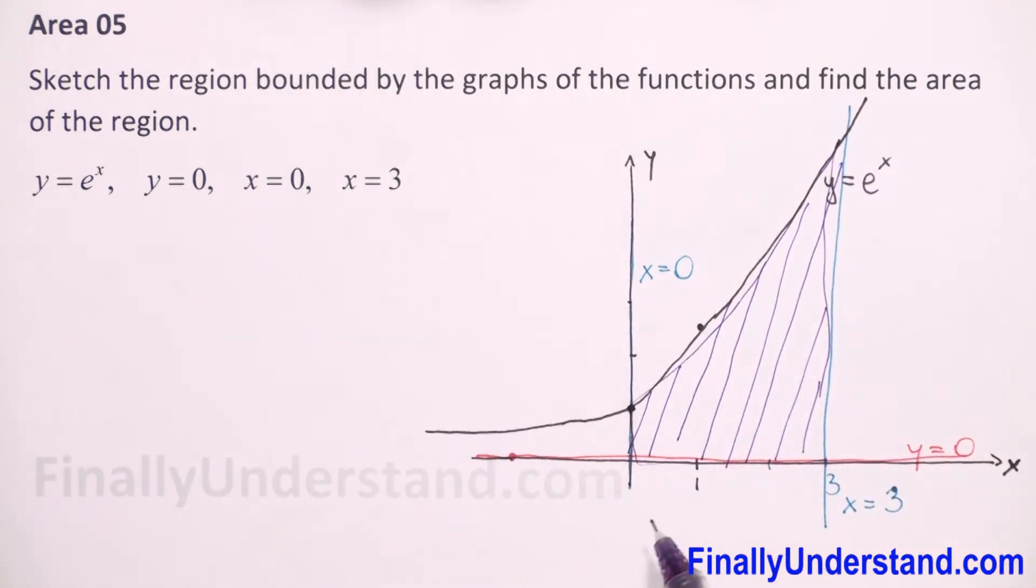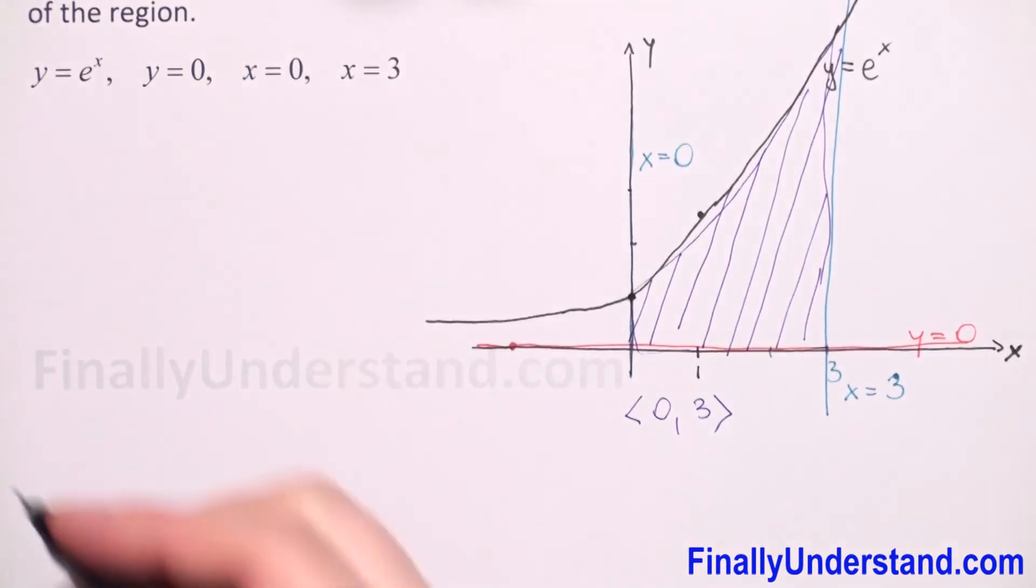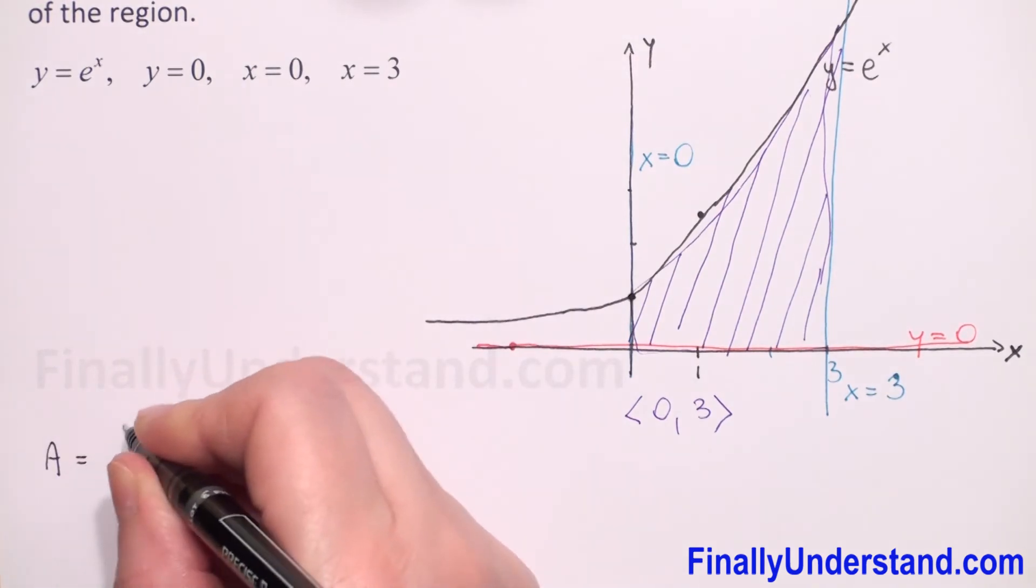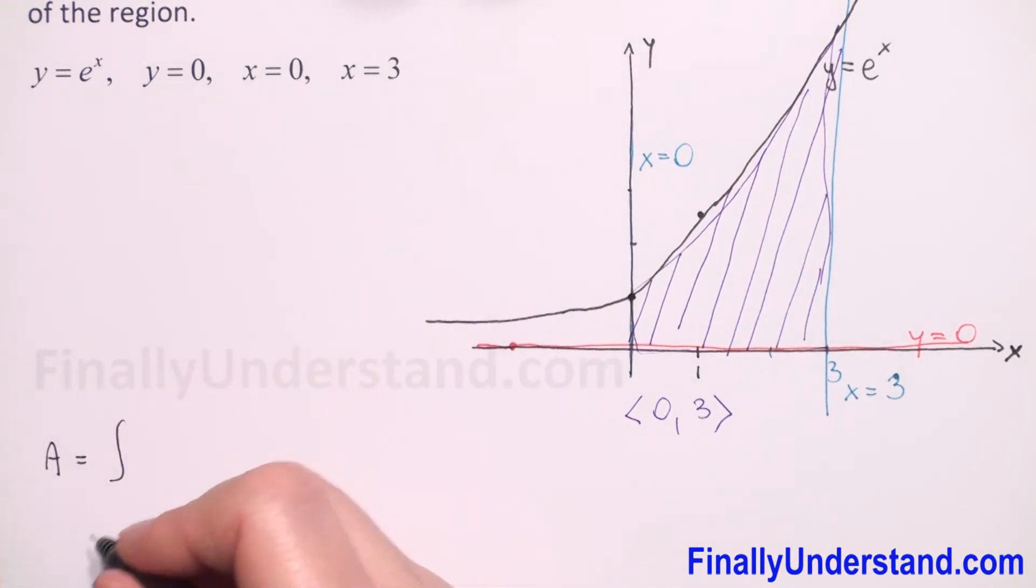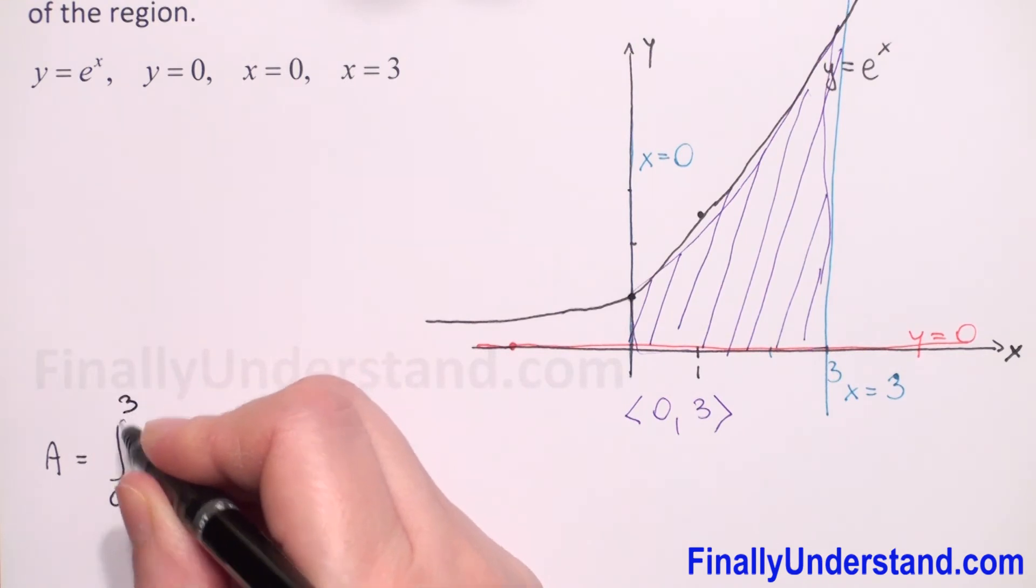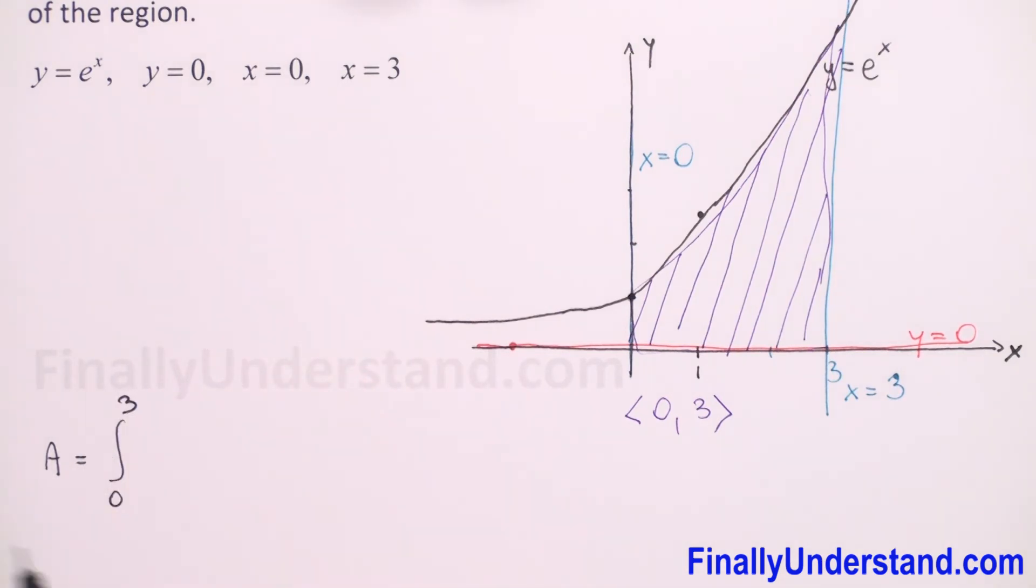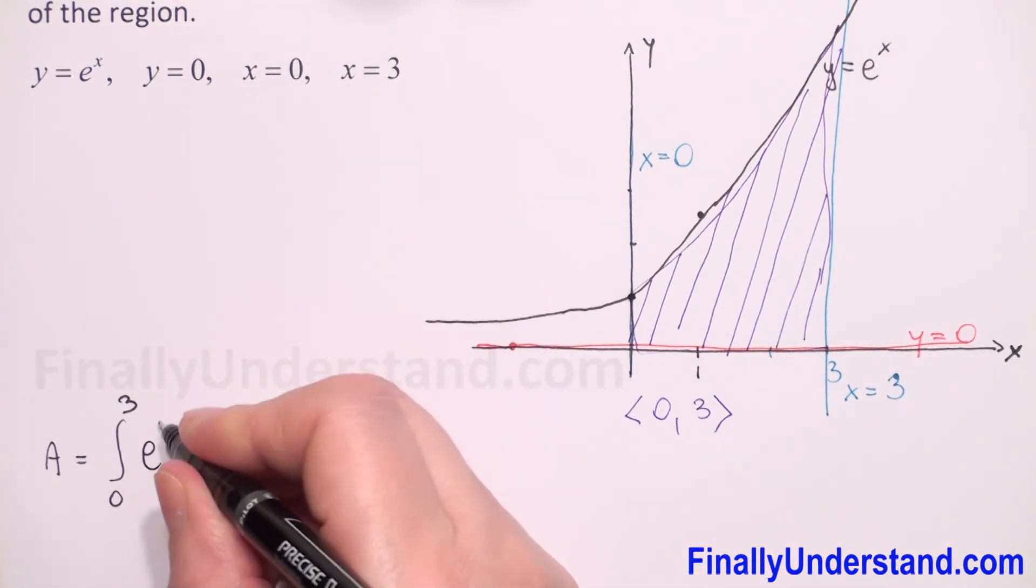We see that this area is between zero and three. Our function is continuous, so we will use the formula that area equals the integral from zero to three, definite integral, and our function is e to power x.